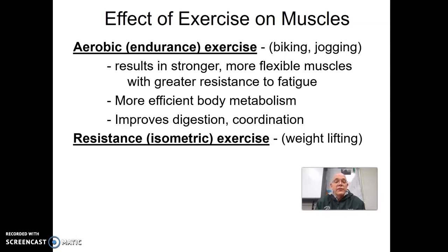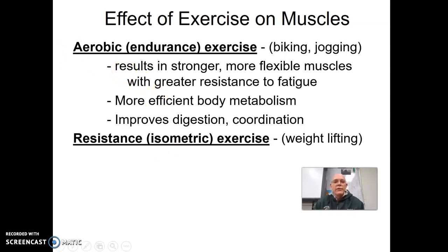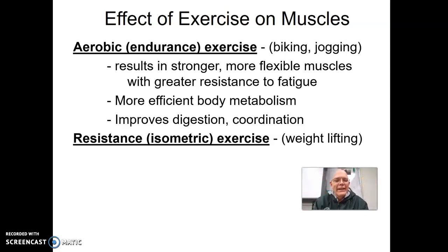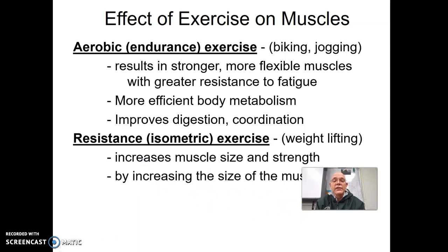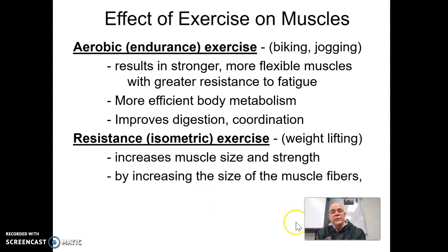Resistance or isometric exercise — weightlifting would probably be one of the biggest examples. You're pushing something away or against something resistant. In this type of training you're going to get larger individual muscles, because each individual muscle cell actually gets larger. In aerobics they get stronger and more flexible, but they don't necessarily get bigger. This is why a weightlifter bulks up. It's still healthy for you — it just doesn't have a lot of the other benefits that come with aerobic training. It increases your muscle size and strength by increasing the size of the muscle fibers, which is why you bulk up and get bigger.